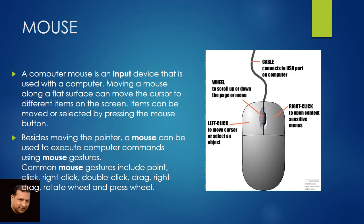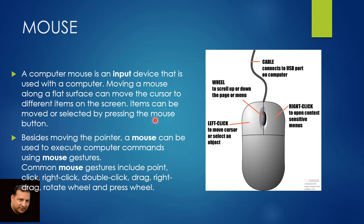Now we have mouse. If you see it, it looks like a mouse with a tail. It is connected to a port — a PS2 port or USB port. There is a left-click button and a right-click button. A computer mouse is an input device that is used with a computer. Moving a mouse along a flat surface can move the cursor to different items on the screen. Items can be moved or selected by pressing the mouse button.